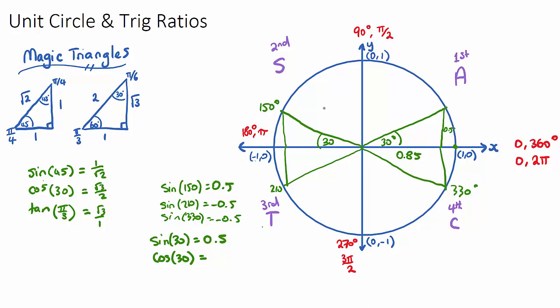In the second quadrant here, only sine - that's why it's the S quadrant - is positive, because any angle in the second quadrant will have a positive height but it has a negative width. It's going left of the y-axis, so only sine is positive.